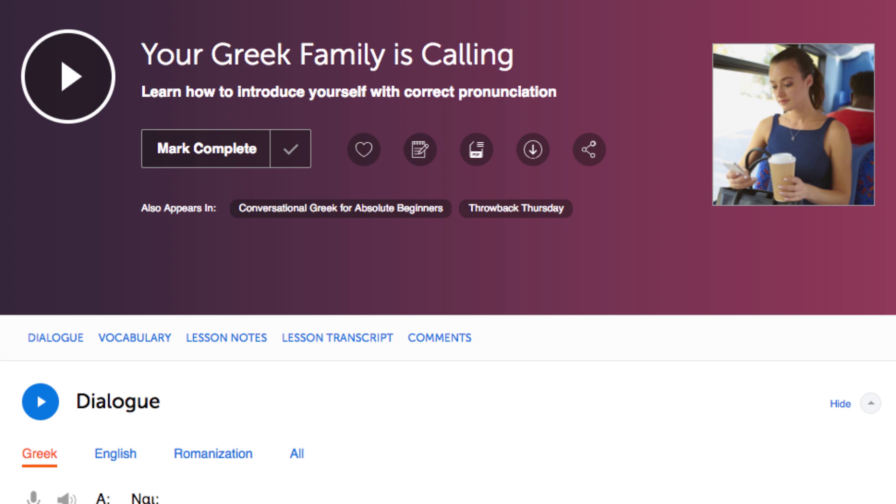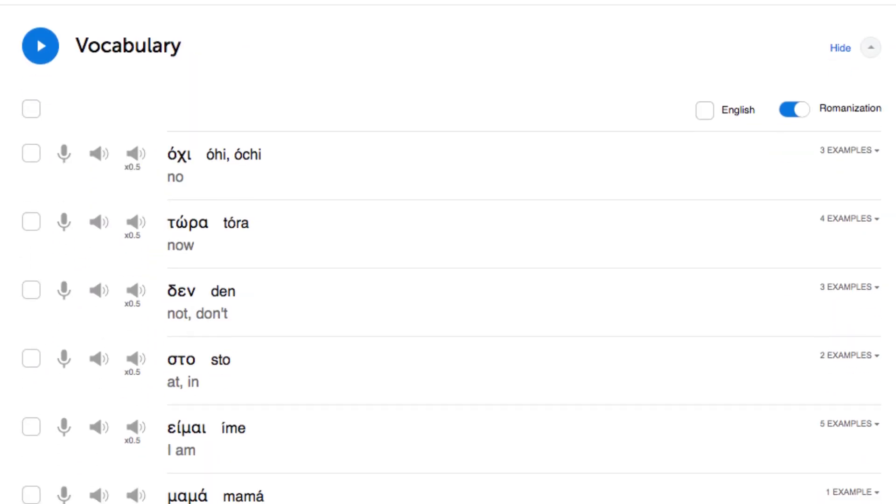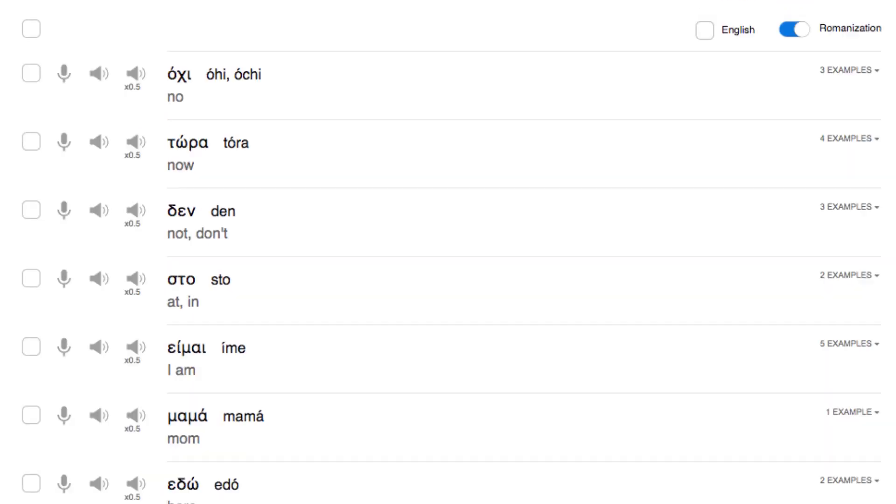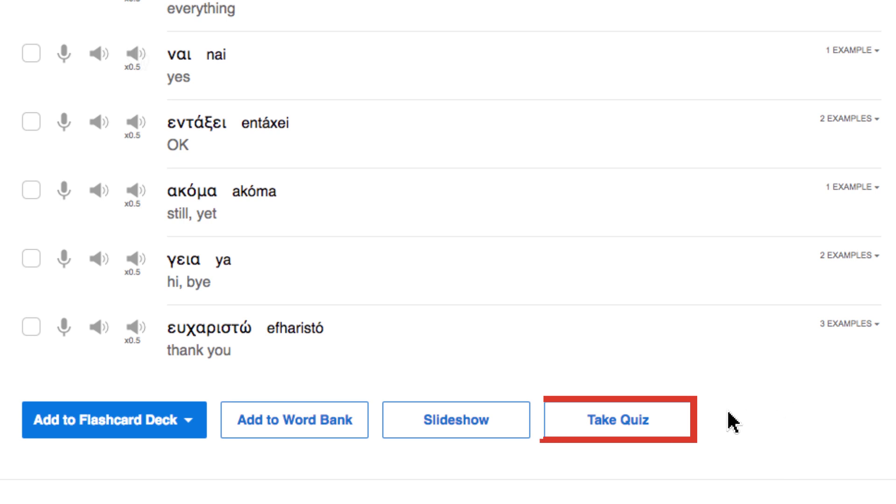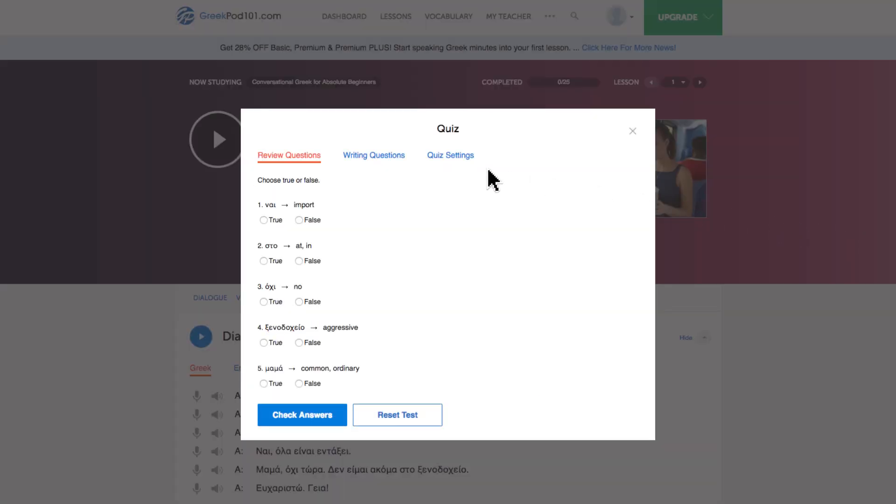Number two, take the writing quizzes. With every lesson, you get review quizzes to help you master what you've learned. Just scroll down to the vocabulary section or click on vocabulary. Click on take quiz and then click on writing questions.